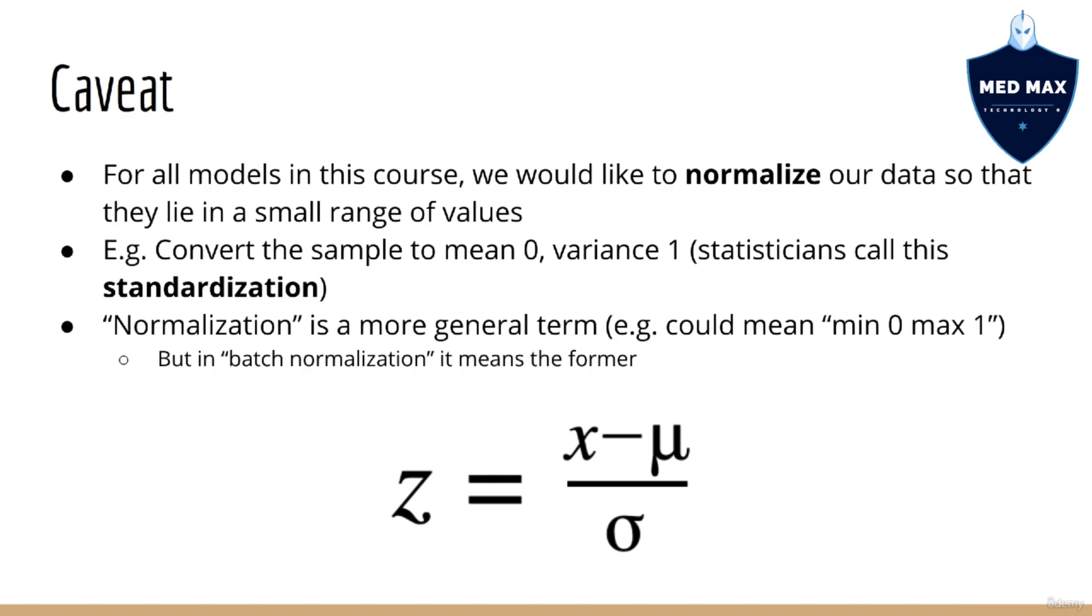This is opposed to the term normalize, which could refer to standardization, but is a more general term overall. For example, it could mean transforming your data so that it stays in the range 0 to 1. This is not the same as having mean 0 and variance 1. On the other hand, in cases like batch normalization, which you'll learn about later in this course, it does refer to the standardization operation.